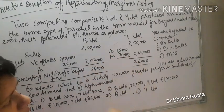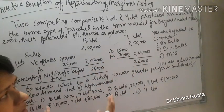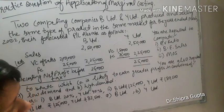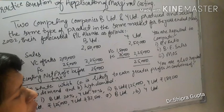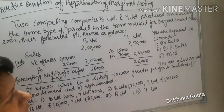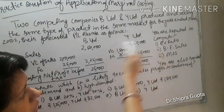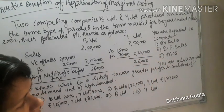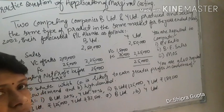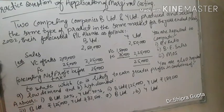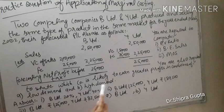In my last video I taught you regarding this same topic, and this is the practical question for applying that knowledge. You will calculate these points: PV ratio = (S minus V) upon S multiplied by 100, applied to both companies. Breakeven sales = fixed cost upon PV ratio. Margin of safety = sales minus breakeven point. Then you will calculate which company is better when demand is low and when demand is high.